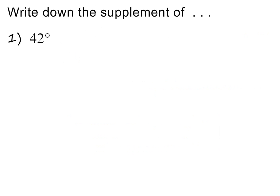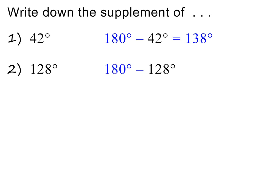Here we are asked to find the supplement of 42 degrees. In other words, we need to find a second angle so that 42 degrees and this second angle are supplementary angles. To answer this, we need to subtract the given angle from 180 degrees. The supplement of 42 degrees is therefore 138 degrees. Next, we are asked to find the supplement of 128 degrees. Please pause to do it. We again subtract the given angle from 180 degrees. The supplement is therefore 52 degrees. How did you do?